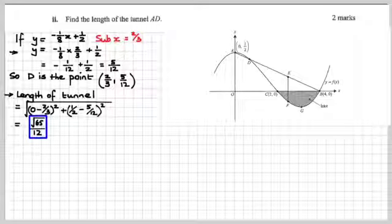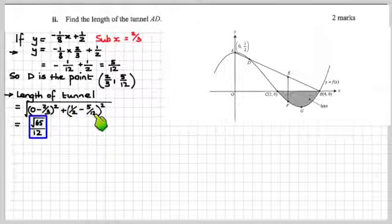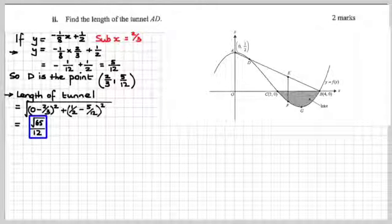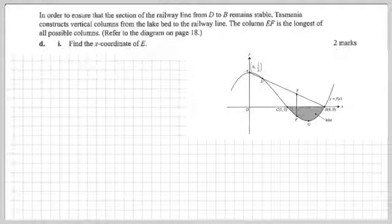Okay, now you could do that very easily and to great effect with CAS, which is what I would recommend you do. But just be careful with the keystroking, make sure you type in everything correctly, and you will triumph. All right, what else have we got here? Goodness, this is getting to be bigger than Ben-Hur, this thing. In order to ensure that the section of the railway line from D to B remains stable, Tasmania constructs vertical columns from the lake bed to the railway line. The column E to F, that's this one here, is the longest of all possible columns. Refer to the diagram. Yes, we've got the diagram. Find the x-coordinate of E.